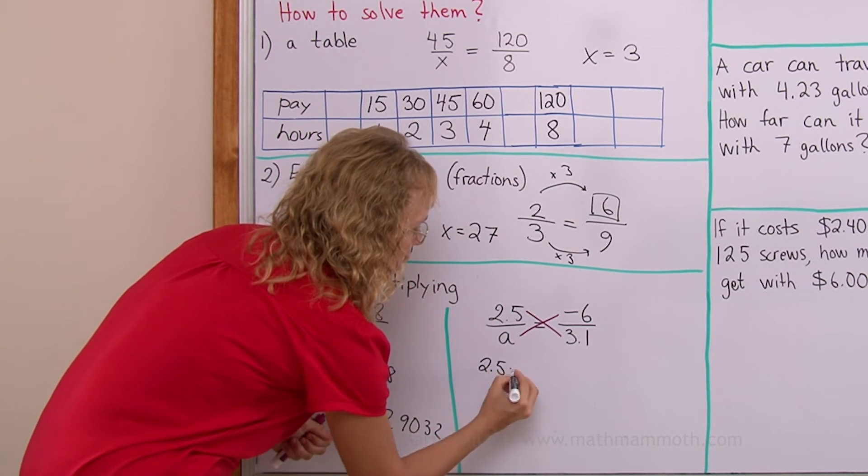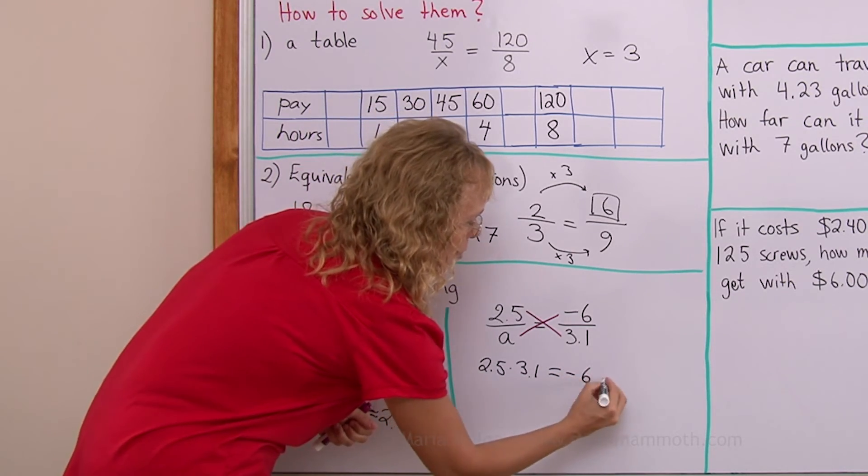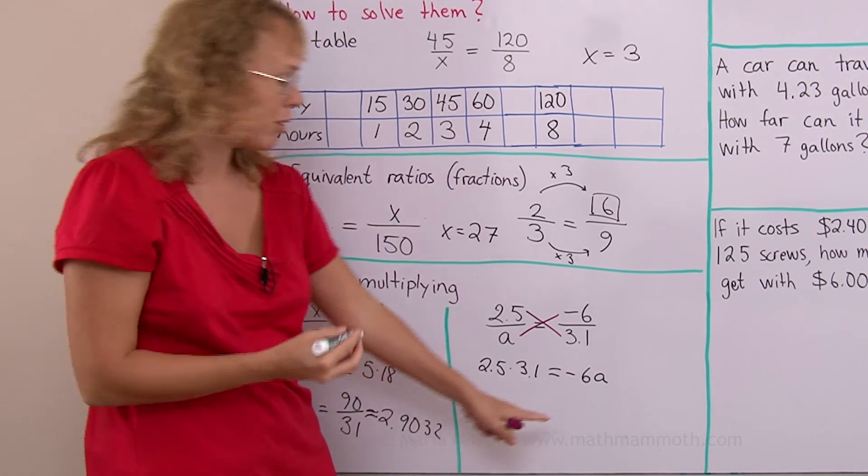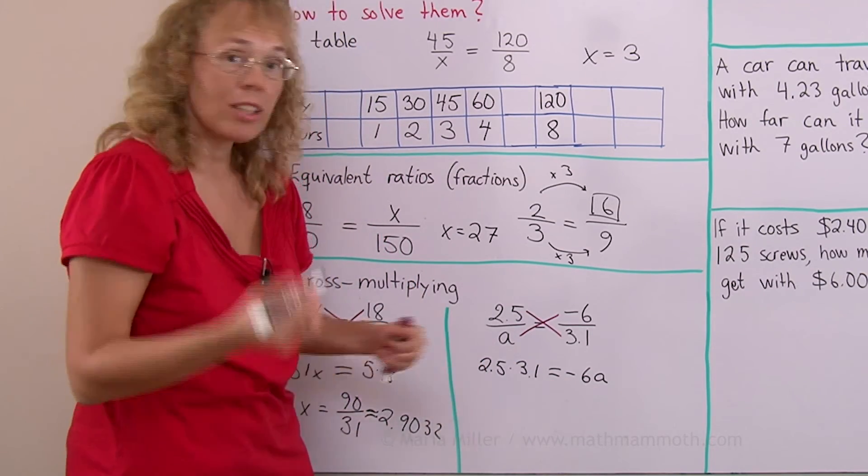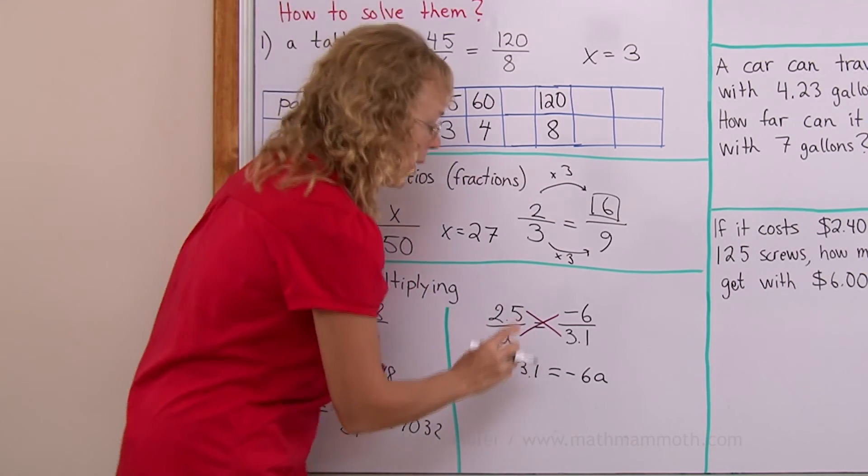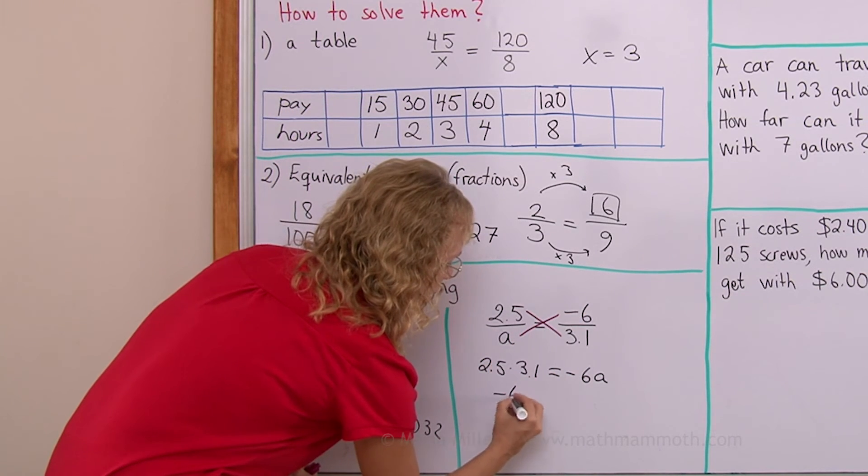2.5 times 3.1 equals minus 6 times a. And then if you want to, you can switch a so that it is on this side. Or you can start just from the beginning, write your equation so that you get minus 6a on this side. It doesn't matter.